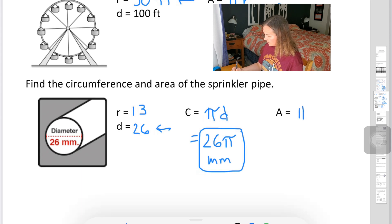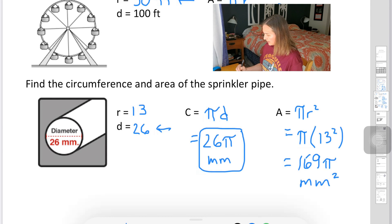For area, our formula is pi times radius squared. In this case, we'll end up with pi times, and the radius is 13 squared. Square my 13, I get 169. Keep my pi as pi in this one, and I get 169 pi millimeters. And my area is going to be squared.